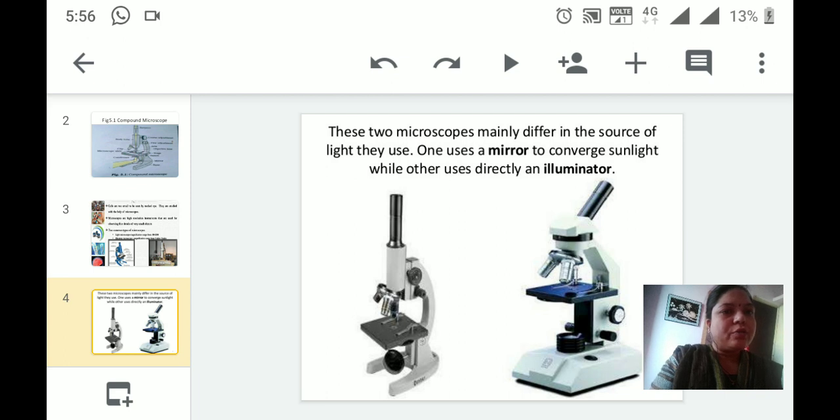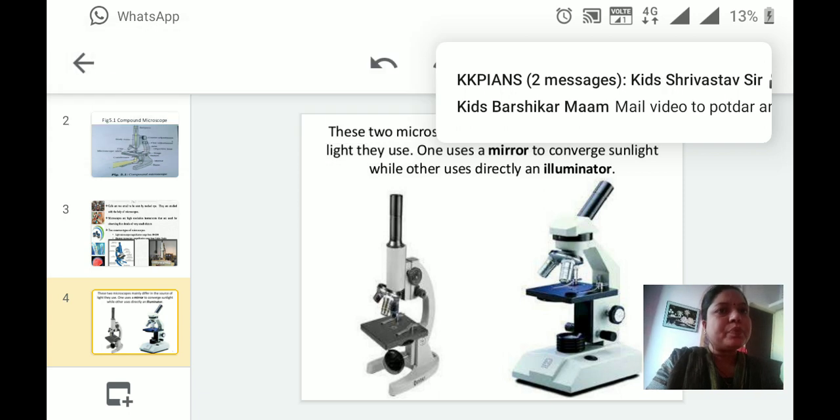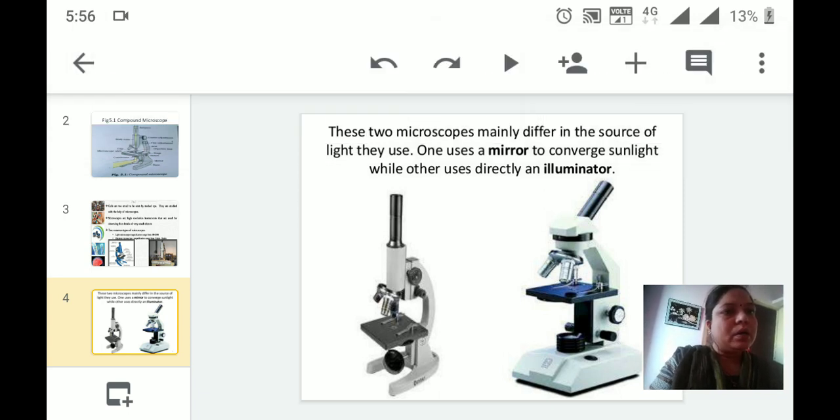The first diagram is of the common compound microscope, which we are having in our biology lab also. The second is the compound light microscope. There is a very small difference present between these two structures. These two microscopes mainly differ in the source of light they use. In case of the first diagram, which is a common compound microscope, the mirror is utilized to converge the sunlight. Instead of a mirror, in that compound light microscope, illuminators are utilized at the base.